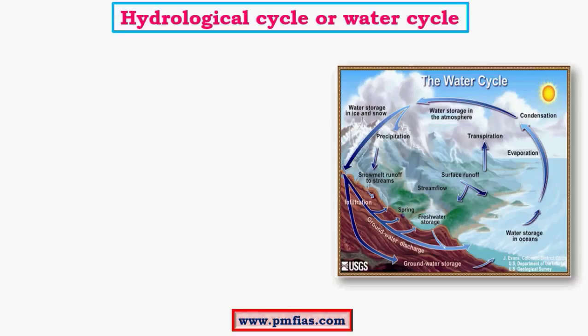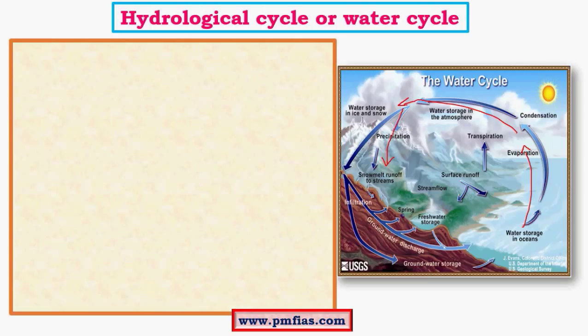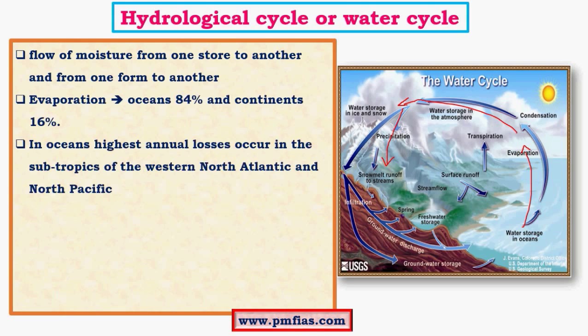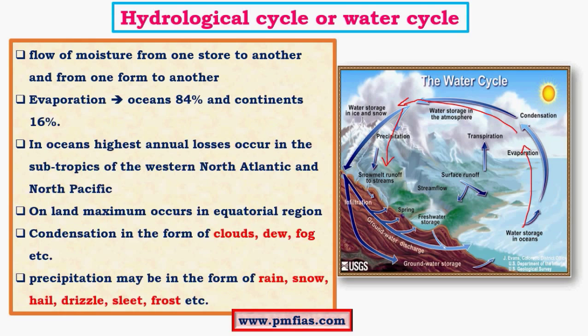Now let us begin with the water cycle. The water cycle is a very simple process — we have evaporation and at the upper layers we have condensation, which after a certain point gives rise to precipitation. This is all about the water cycle where water vapor is exchanged between various stores of the environment. Evaporation is maximum over oceans because of greater availability of water.